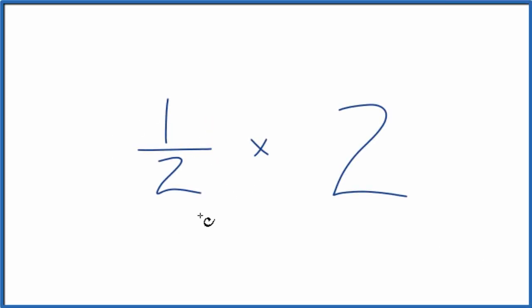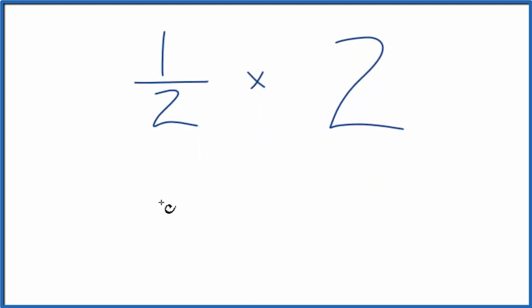Let's multiply the fraction 1 half times 2. So to do this, probably the easiest way is to think of this as 1 half times 2 over 1. 2 over 1, it's still 2. We're just dividing 2 by 1. That's still 2, but now it's easier to multiply because when we multiply fractions,